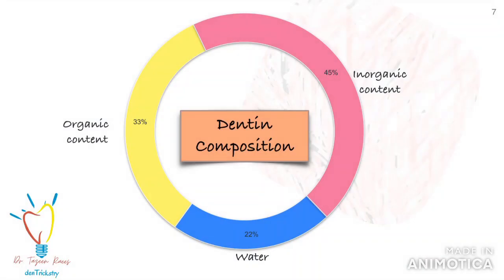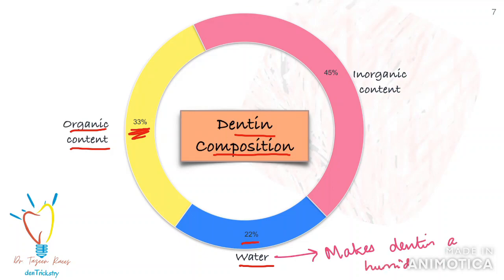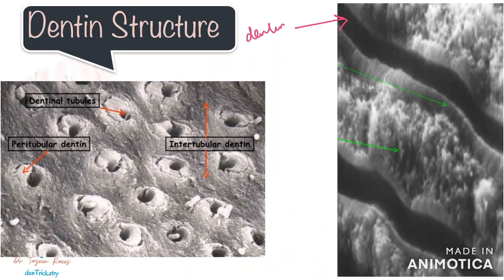However, is it the same for dentine? Dentine is a more complex structure, and because of this, dentine bonding has been one of the most challenging and less predictable tasks in adhesive dentistry. To understand these issues, we'll look into the histology of dentine briefly. In contrast to enamel, dentine has a lot more organic component and also water, which makes it a humid structure overall.